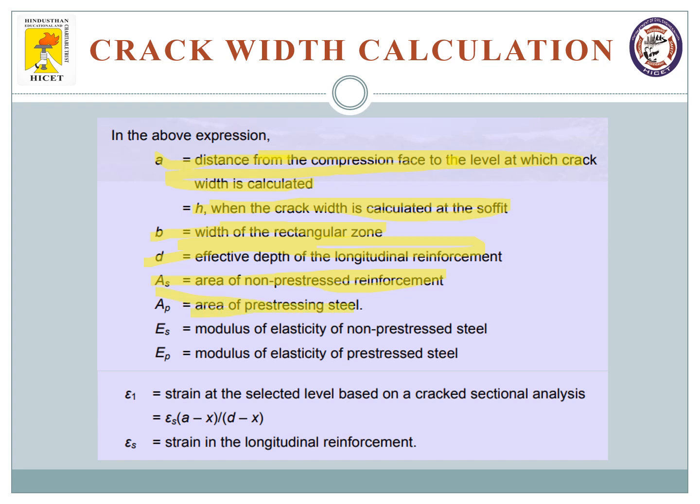Ap is the area of prestressing steel. If you are talking about prestressing steel, this formula is being used. If not, it can be ignored. Es is the modulus of elasticity of non-prestressed steel and Ep is the modulus of elasticity of prestressed steel. Epsilon 1 is the strain at the selected level based on crack sectional analysis. All these values can be calculated and substituted in the formula to get epsilon M.